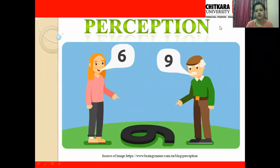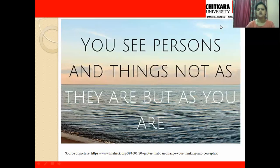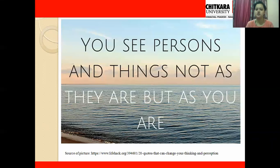Hello everyone. Today we are going to learn about the topic of perception. Let's start and understand the meaning of perception with a simple quotation: 'You see persons and things not as they are, but as you are.' That simply means we perceive stimuli in accordance with ourselves. Individual differences and individual factors affect our perception.